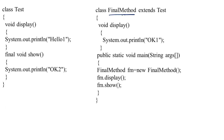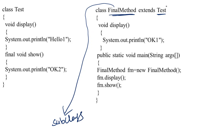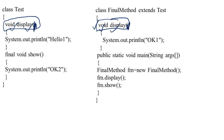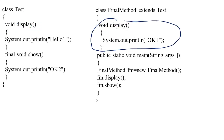Now I have another class: class FinalMethod extends Test. FinalMethod is the subclass and Test is the superclass. Here in the subclass I also have void display. They have the same return type, the same name, and the same number of arguments — no arguments in either. In such a case, the subclass method overrides the superclass method.